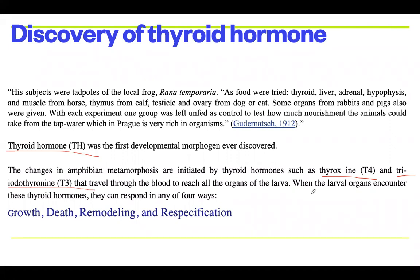When these thyroid hormones are secreted, the internal organs of the larva respond in any of four ways: some tissues start growing; opposite to that, some are dying; some tissues remodel themselves, changing their morphology and functions; and some re-specify. The same thyroid hormones can bring about different responses from different organs or tissues present inside the larva.